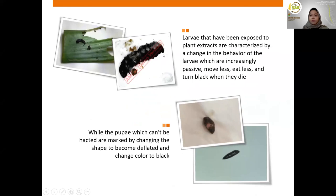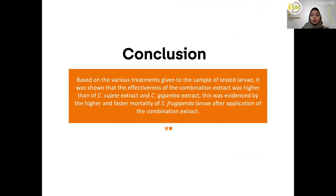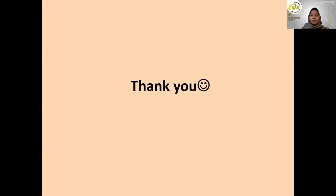Larvae that have been exposed to plant extract are characterized by a change in behavior: they become increasingly passive, move less, eat less, and turn black when they die. Pupae that fail to hatch are marked by becoming flat and changing color to black. In conclusion, the effectiveness of the combination extract was higher than that of C. gigantea extract or C. dujete extract alone. Thank you.